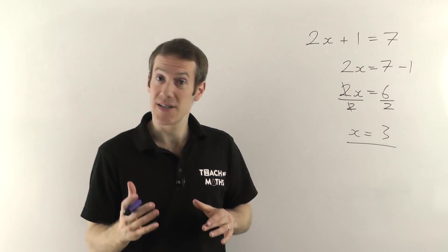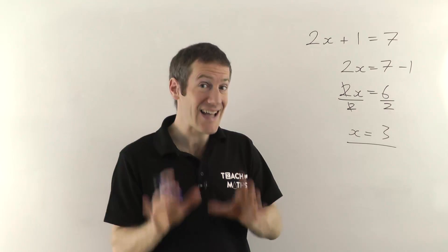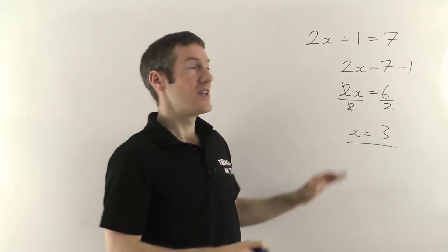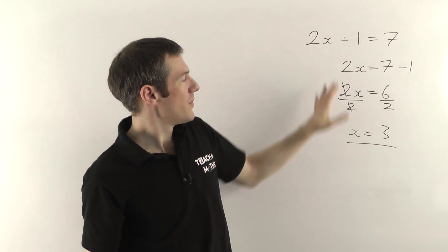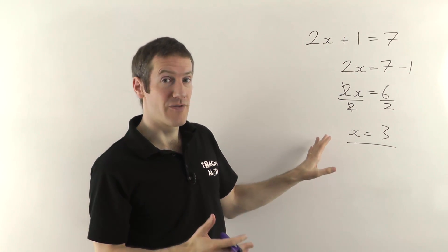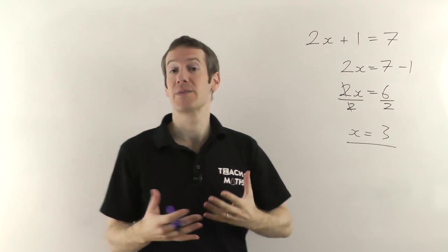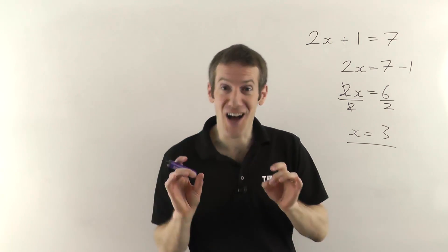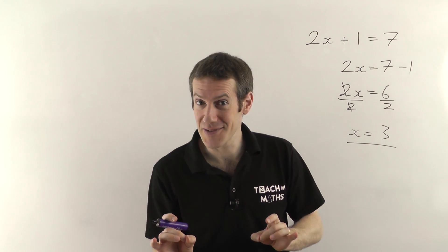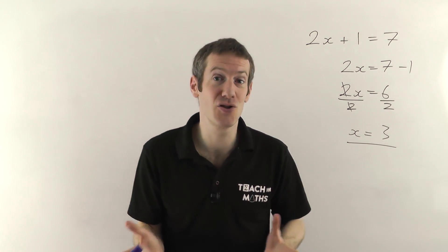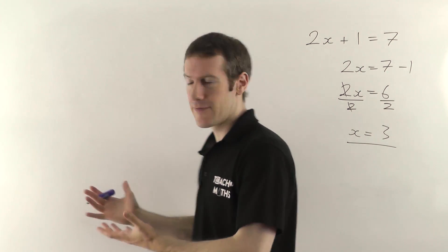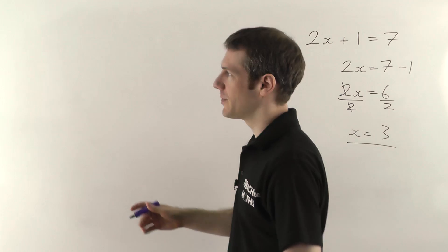That's how you solve a normal equation. Transposition, if you remember, is exactly the same as solving equations — it's just that most, if not all, of the numbers have been replaced by letters. But in algebra, letters are numbers, so you don't actually do anything different. Let's try our first proper example.